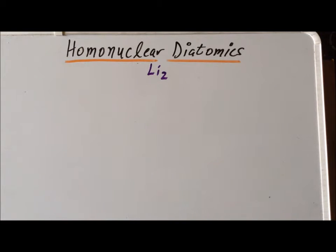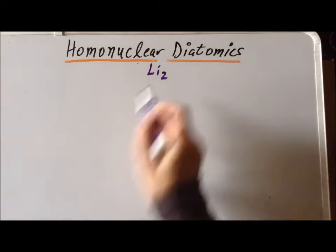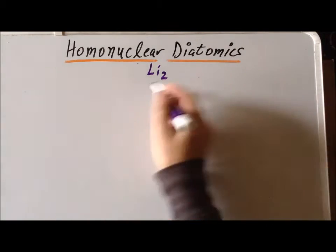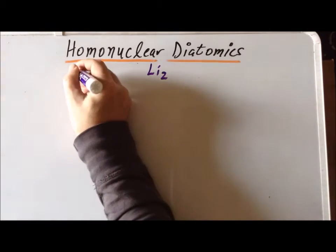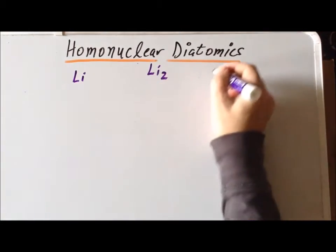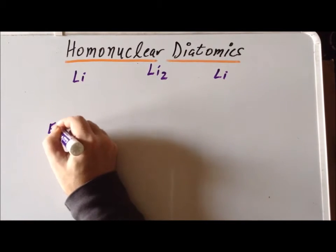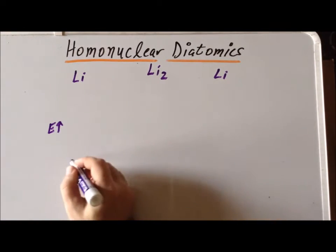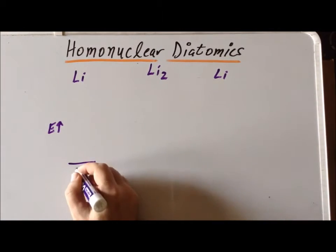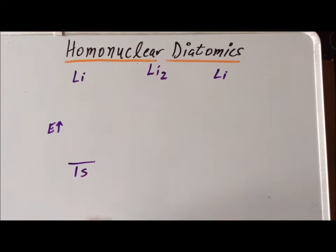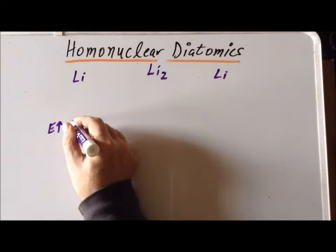The first molecule from the second row of the periodic table that we are going to examine is lithium-2. Lithium-2 consists of two lithium atoms. Recall that lithium has three electrons in two orbitals: the 1s and the 2s orbitals.